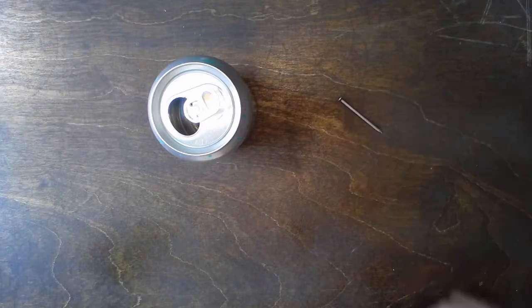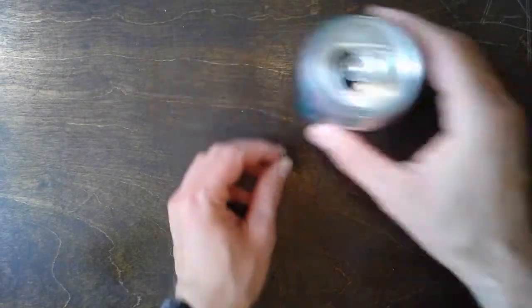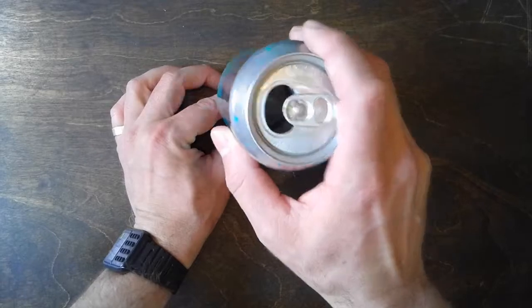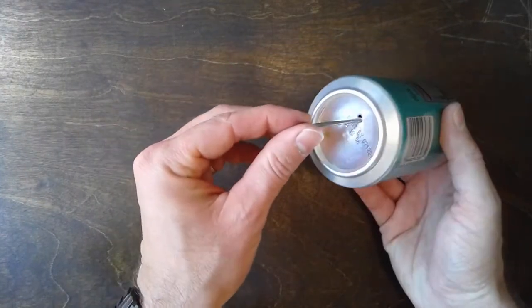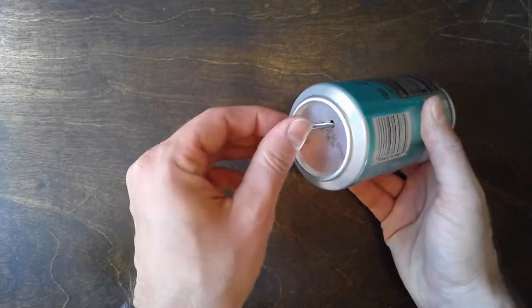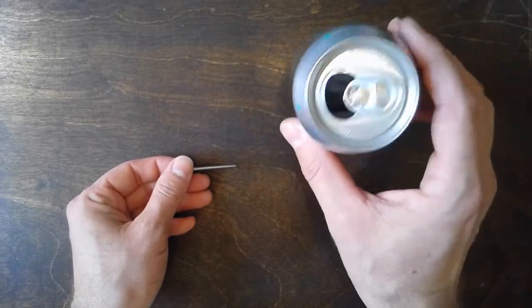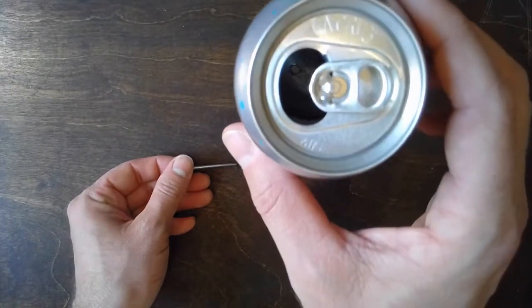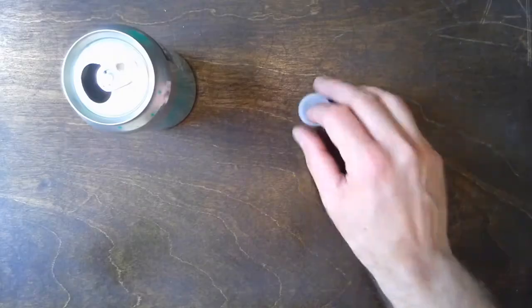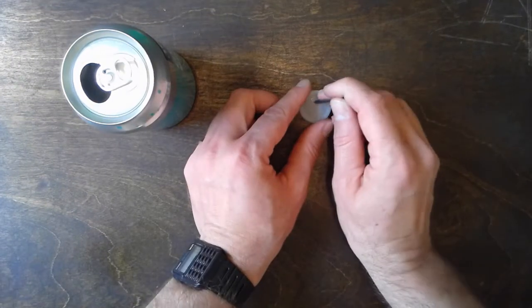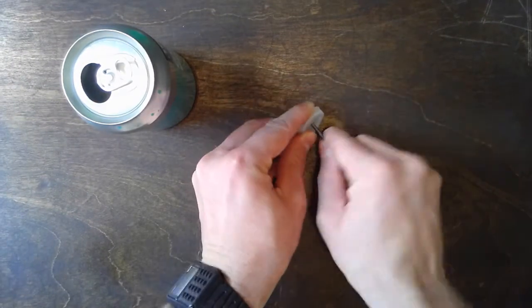Grab your empty soda can and your nail, and we're going to put a hole in the bottom of the soda can very carefully, just like that. Now we're going to put a hole in the bottle cap as well using the nail. Make sure to be careful while doing this; don't poke yourself.